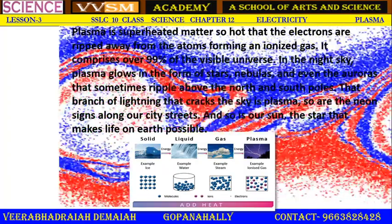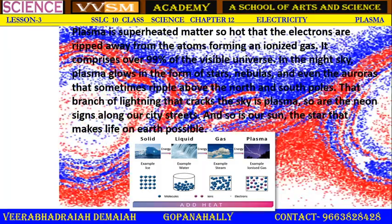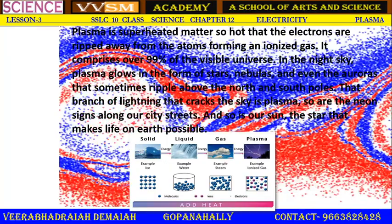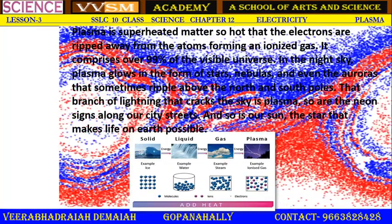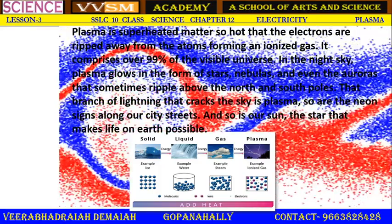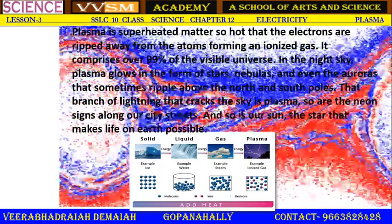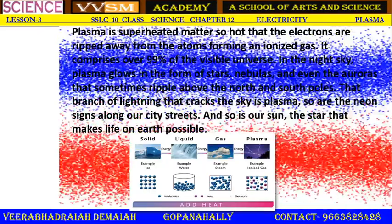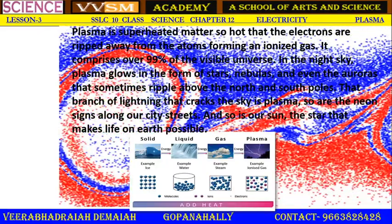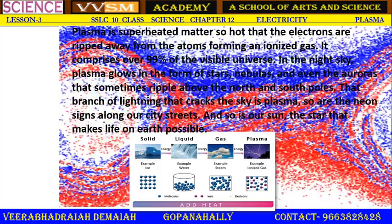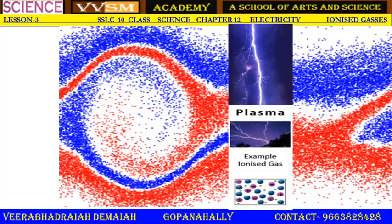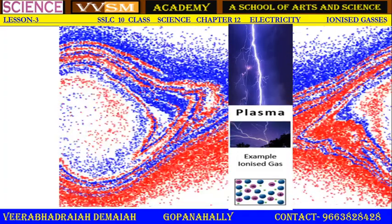Science and technology is always advancing day by day. Today's science is not the same for tomorrow's science — that is the specialty of science and technology. Plasma state of matter is the fourth state of matter, where we can come across ionized gases.